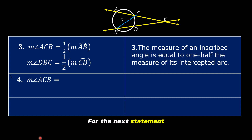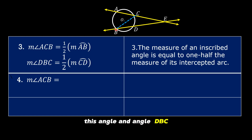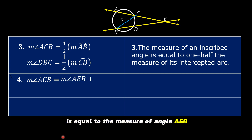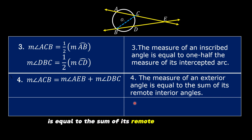For the next statement, angle ACB is an exterior angle with respect to triangle CBE. And angle AEB and angle DBC are its remote interior angles. So the measure of angle ACB is equal to the measure of angle AEB plus the measure of angle DBC. The reason is: the measure of an exterior angle is equal to the sum of its remote interior angles.